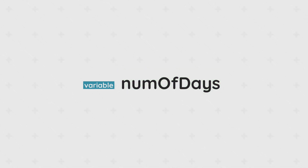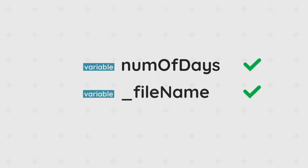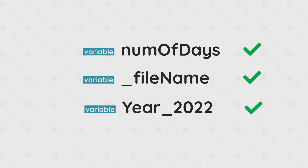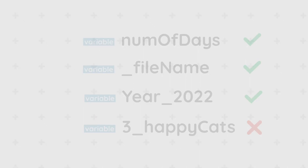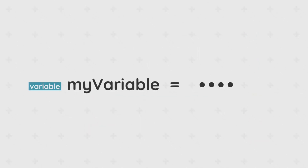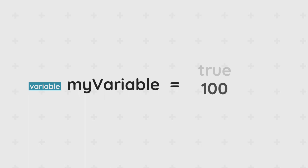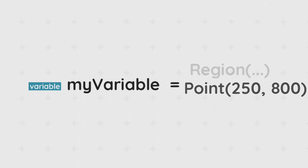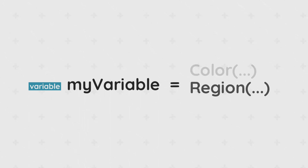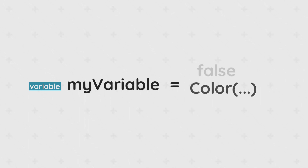Every variable is assigned a name that we can look up at any point in our macro. You are free to call it whatever you like, provided that you start each name with a letter or underscore. Variables are assigned with values of data types.